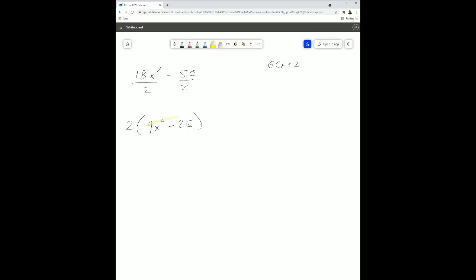So now here we have a difference of two squares. We have 9x squared minus 25. So we can now do, if we factor this, we can have 3x plus 5, because 3x times 3x is 9x squared, and then 5 times 5 is 25, but 1 has to be positive, and 1 would have to be negative. So 3x plus 5, 3x minus 5, and don't forget that 2 we factored out earlier. So this here is the fully factored form for 18x squared minus 50.